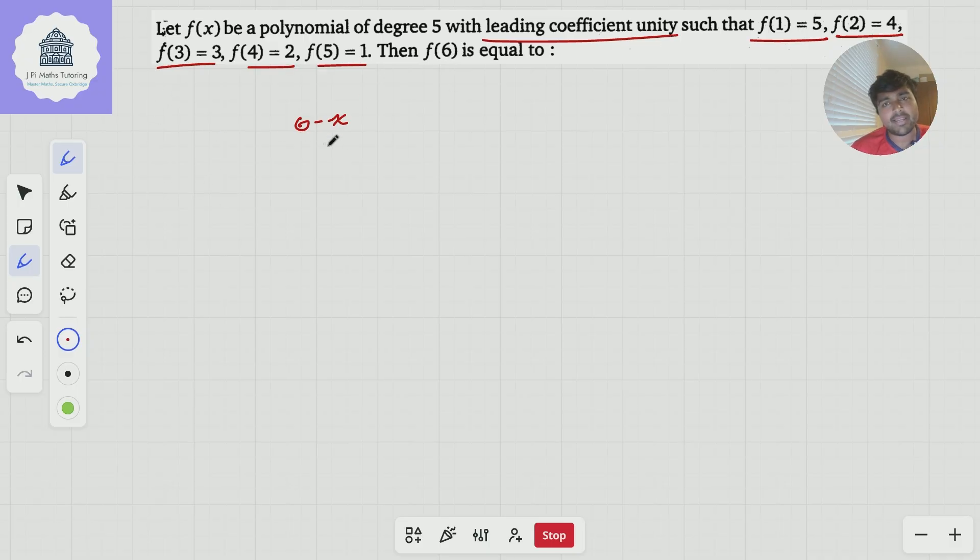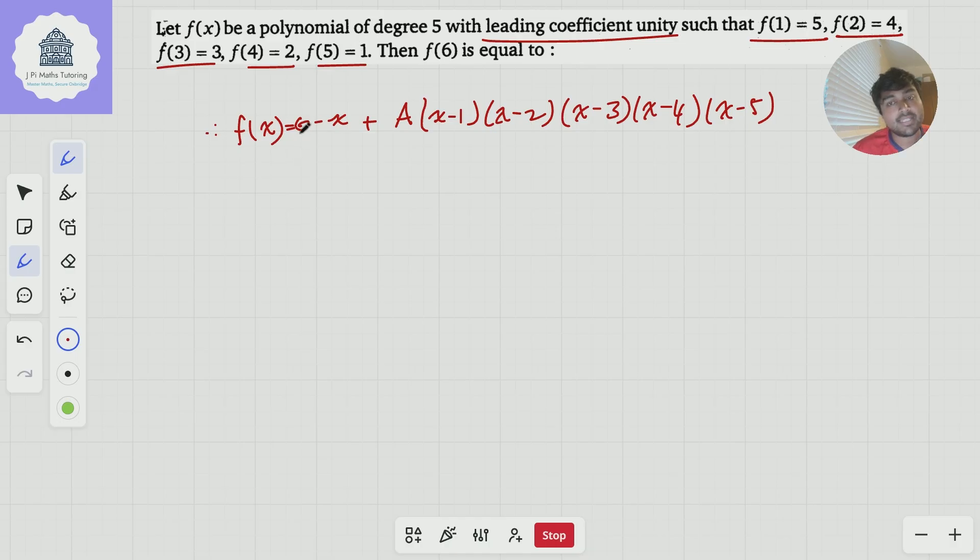And so from that, I can immediately deduce that my function f of x in the question must be 6 minus x plus some multiples, so a being an arbitrary constant, of (x minus 1)(x minus 2)(x minus 3)(x minus 4)(x minus 5), like so. So this function f of x in the question has to be 6 minus x plus a multiple of this polynomial here.